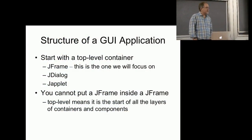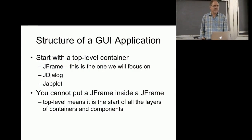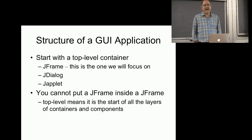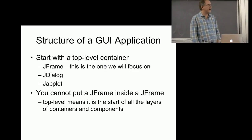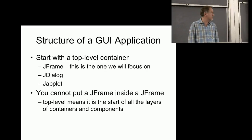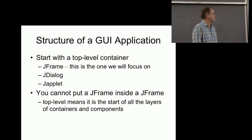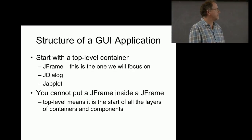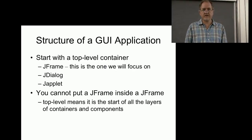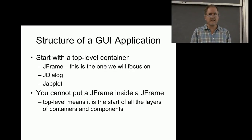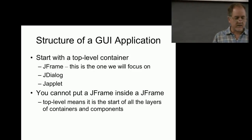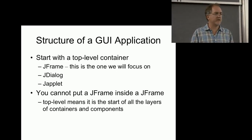In our GUIs, you need to start with what's called a top-level container. Containers are a class that you typically inherit from. Containers hold other containers and also hold components - and components are the things we see: buttons, sliders, and so on. There are different options for top-level containers. We can have JFrames, which we've used already - it provides the red, yellow, green buttons and resizability.